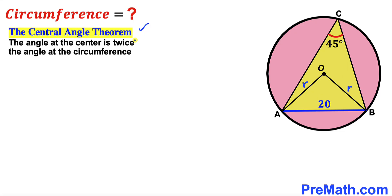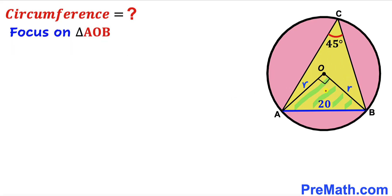Now let's recall the central angle theorem. According to this theorem, the angle at the center is twice the angle at the circumference. We can see that angle ACB is at the circumference and angle AOB is at the center. So if this angle is 45 degrees, then the angle at the center is going to be twice 45 degrees, making it 90 degrees.